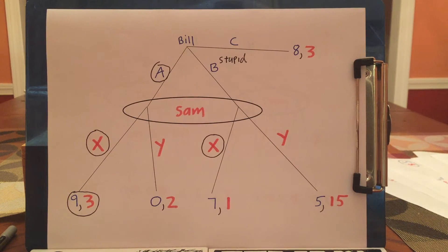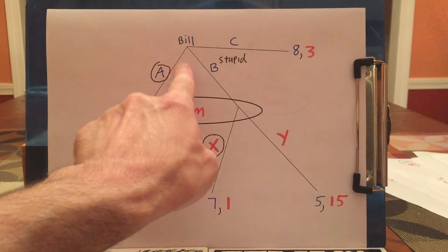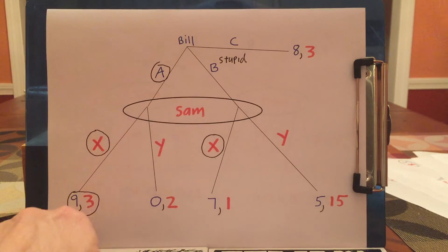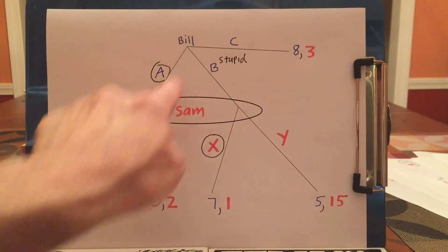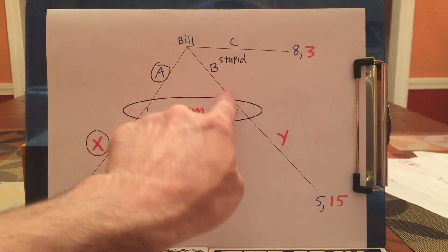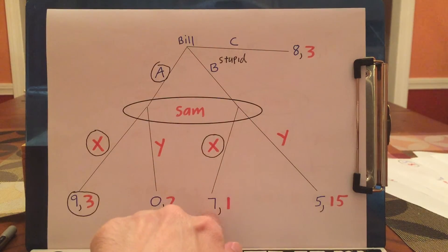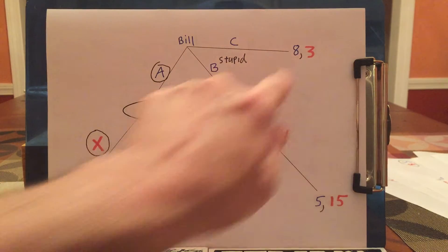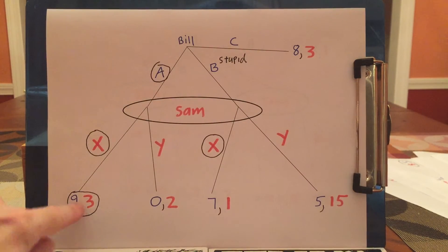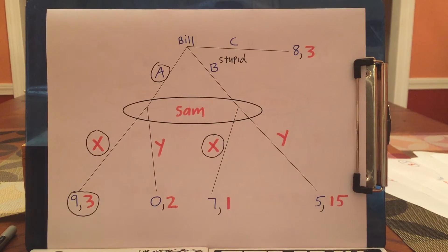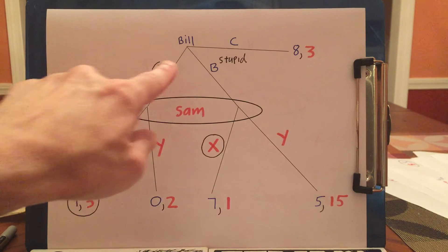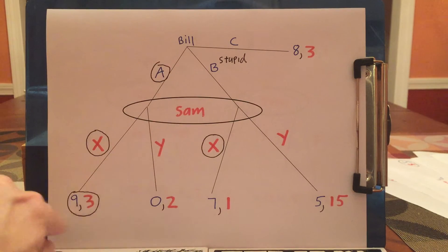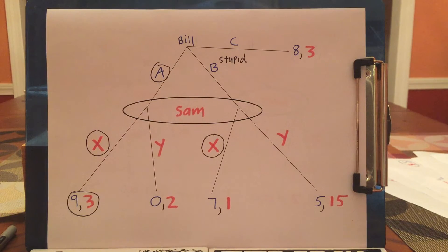Bill should figure this out. Bill should say: if I pick A, I get 9; if I pick B — which is stupid — I would get 7; and if I pick C, I get 8. Well, 9 being the biggest of those three possibilities, that's what I'll pick. I'll pick A, and this is where the parties end up.